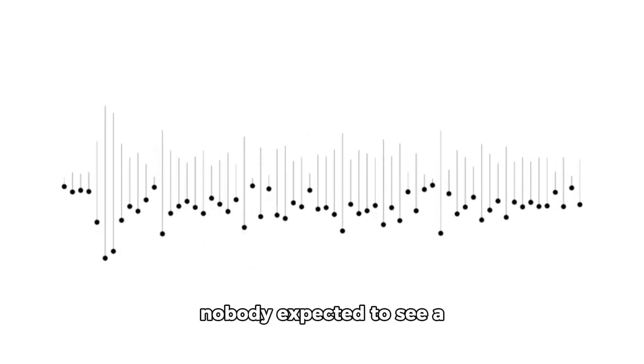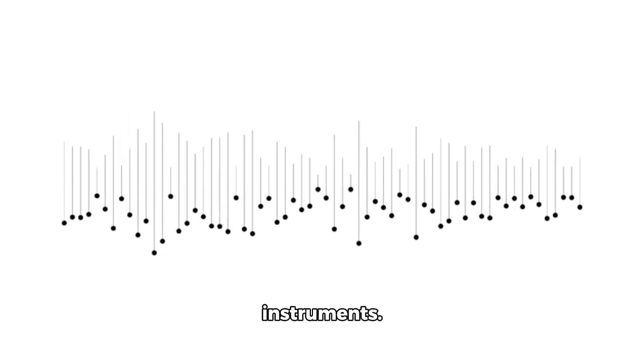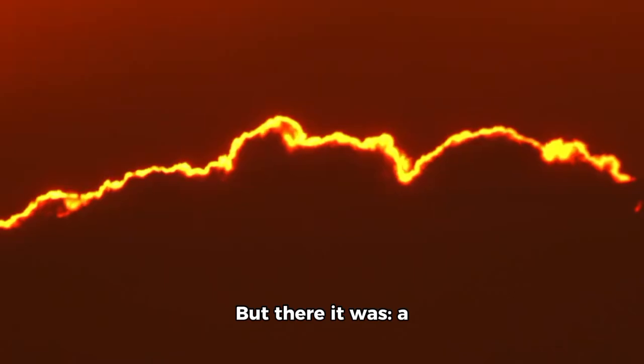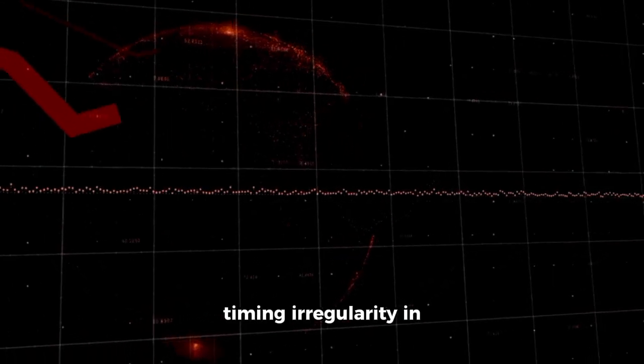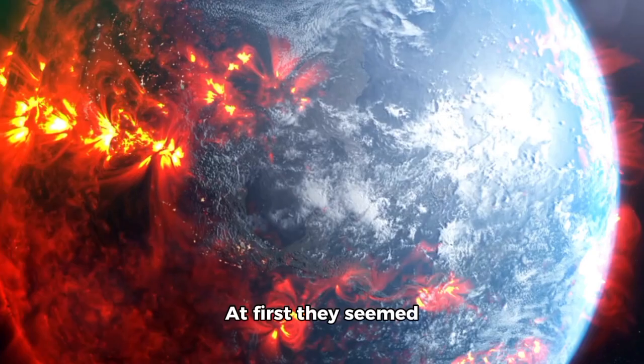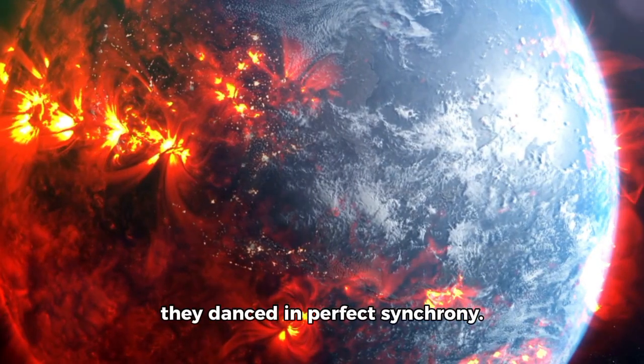When the data came in, nobody expected to see a pattern, especially not across three different instruments. But there it was: a plasma wave anomaly, a geomagnetic pulse, and a timing irregularity in the data packets. At first, they seemed unrelated, but when aligned, they danced in perfect synchrony.